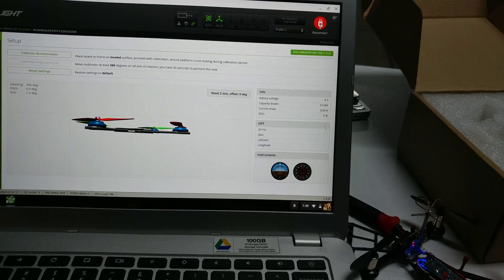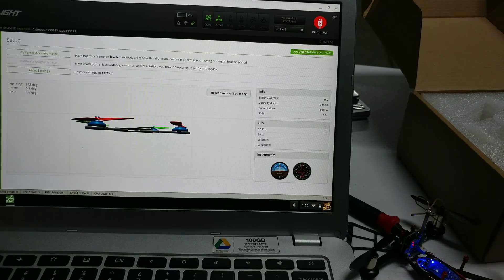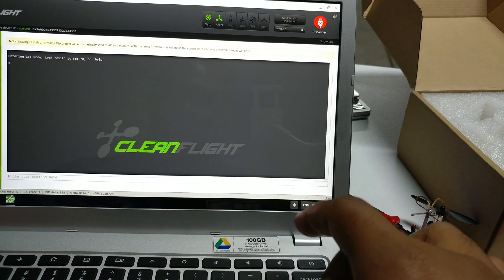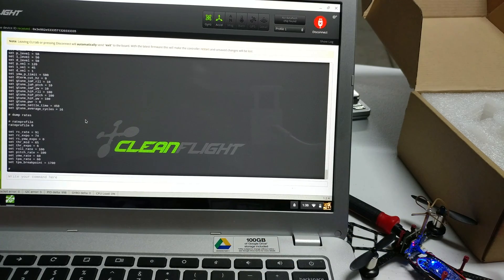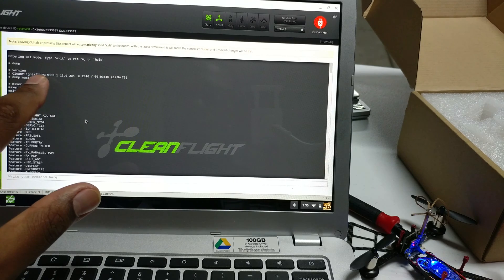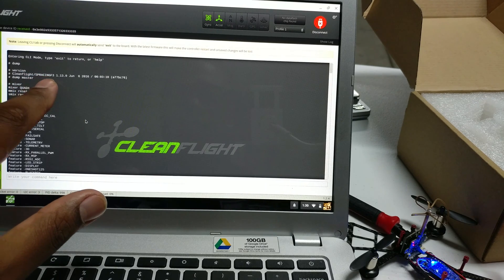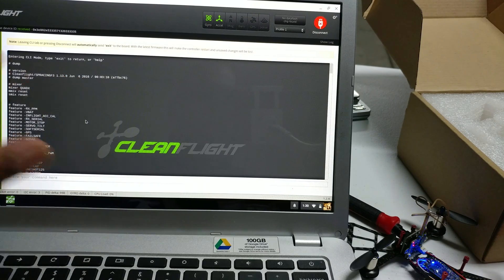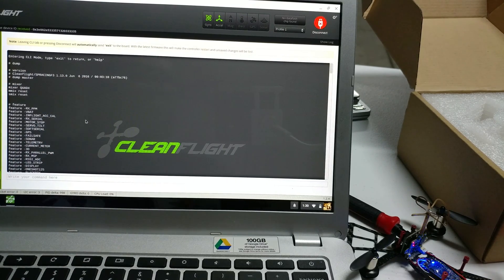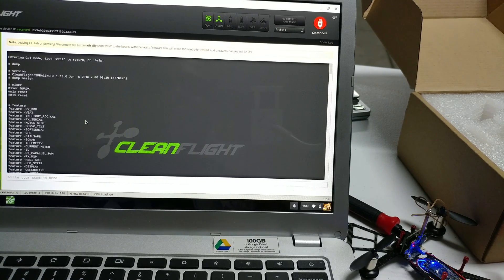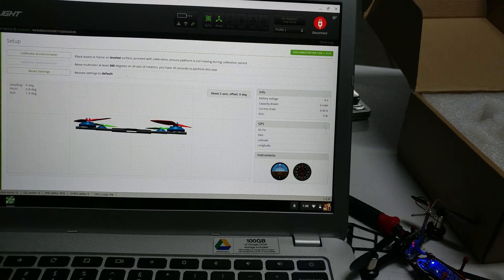Alright. So, first things first. Go down to the CLI. Type in dump. See what version we're on. Scroll all the way back up to the top. We're running CleanFlight. The SP Racing F3 target. Version 1.13 June 6, 2016. So, 1.14 I think just came out. But this is still a pretty good, pretty new version of CleanFlight. So, no problems there. Let's go back out of that.